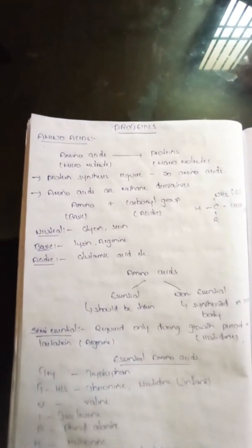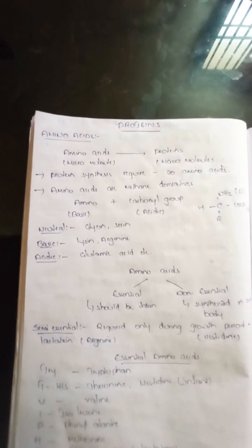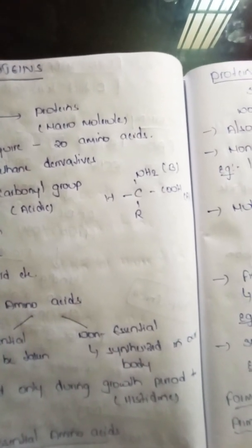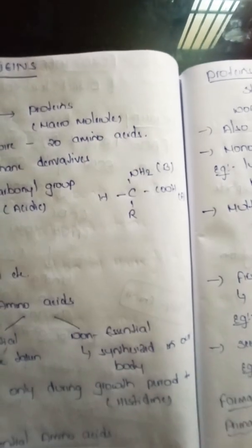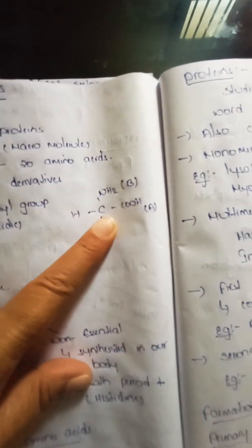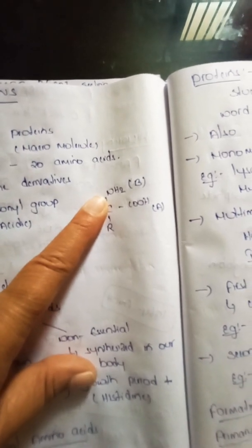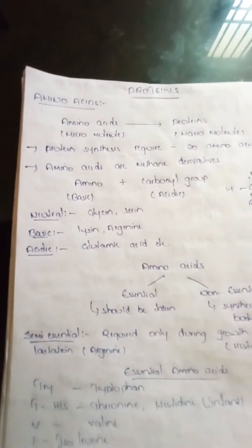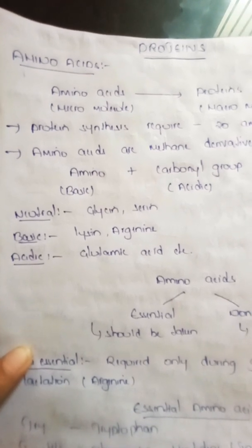Amino acids are methane derivatives. They have an amino group and a carbonyl group. The amino group is basic and the carbonyl group is acidic. This is the structure of amino acids.